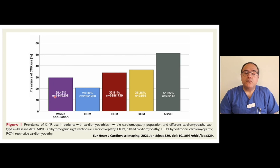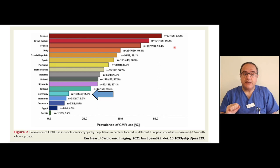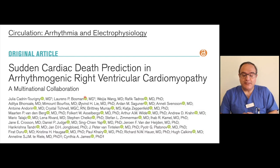This study shows that MRI is used in only one-third of patients in tertiary referral centers across Europe. There are also huge differences between countries. For example, in Greece and Great Britain, around 63 percent and 56 percent of patients respectively receive cardiac MRI in tertiary referral centers. However, in Germany, it is only 11 percent — meaning around 90 percent of patients do not receive MRI, which is critical for making the diagnosis, as in our patient.